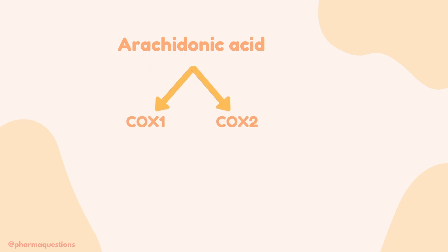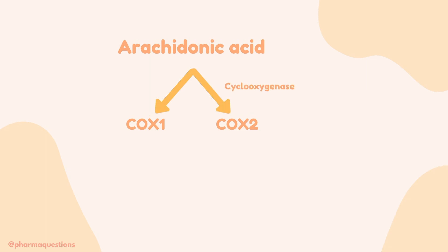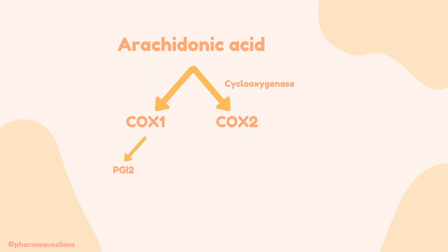So arachidonic acid gets converted into COX1 and COX2 by the enzyme cyclooxygenase. COX1 is responsible for making two products. One of these is prostaglandin I2, also known as prostacyclin, and the function of prostaglandin I2 is to offer gastric protection and basically maintain gastric mucosal integrity.